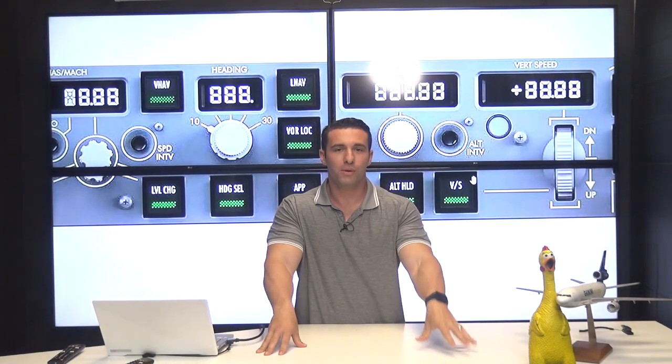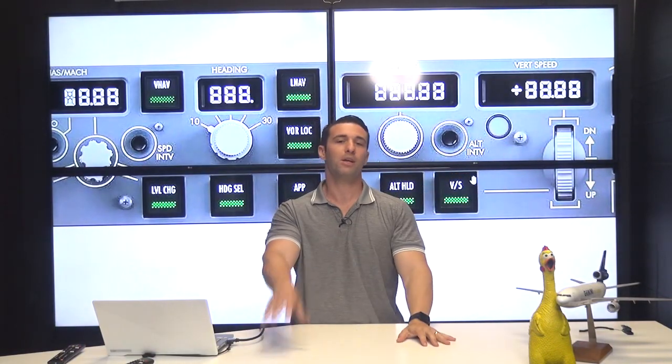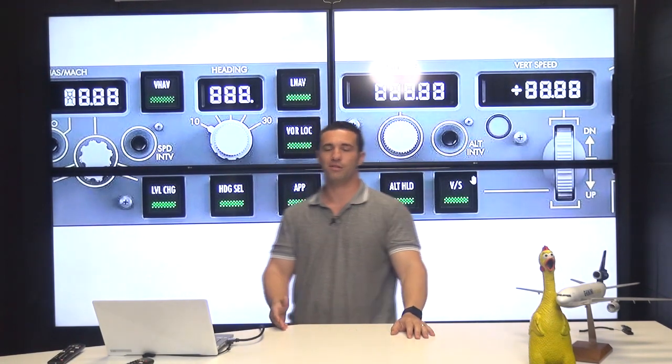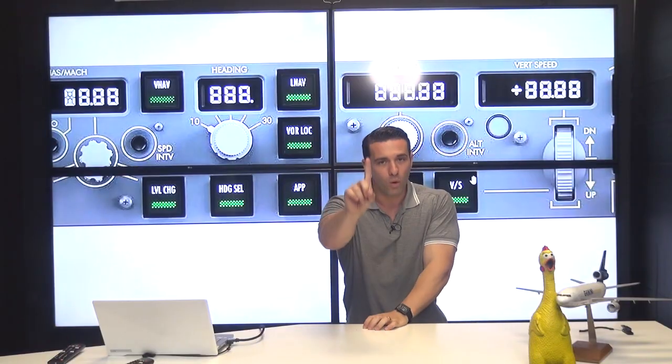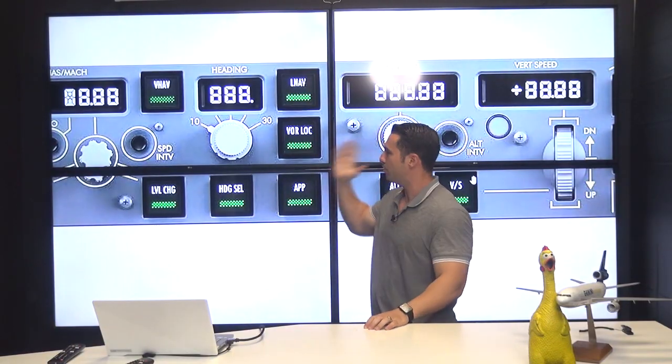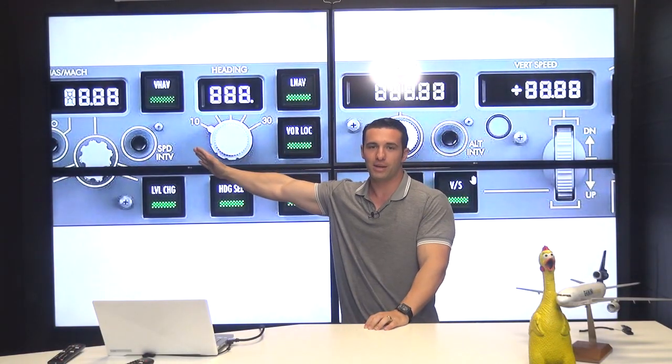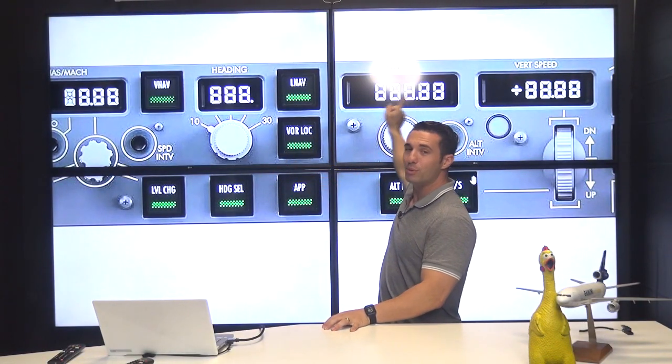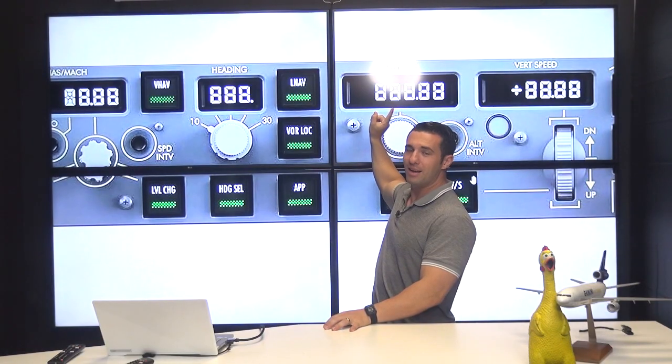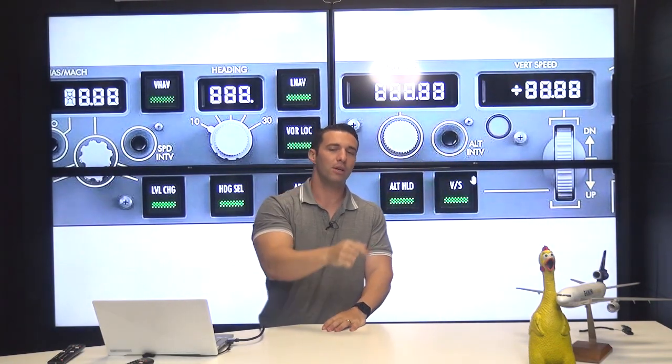Because we have two navigation radios, number one and number two. The number one radio is tied to the number one or the captain's flight director. The number two radio tied to the first officer. So if I have a VOR that I intend to track tuned into the number one navigation radio, which would be respective of the captain's flight director, and I push VorLock, but I happen to have command B, which is the FO's side, now it's going to not look to the number one radio, but it will look to the number two radio and it'll track whatever happens to be there. So that's the relevance of understanding who is the master flight director.